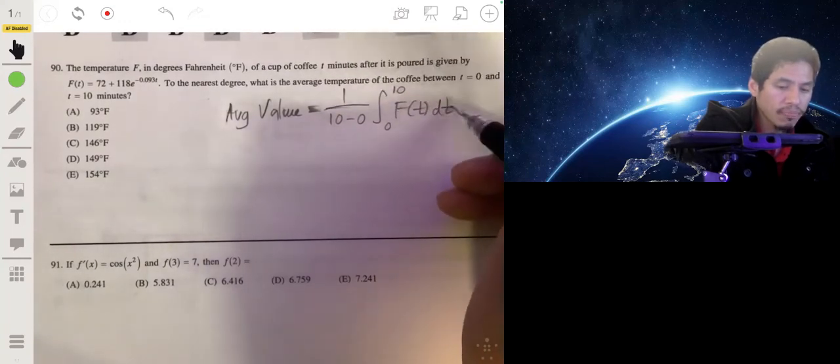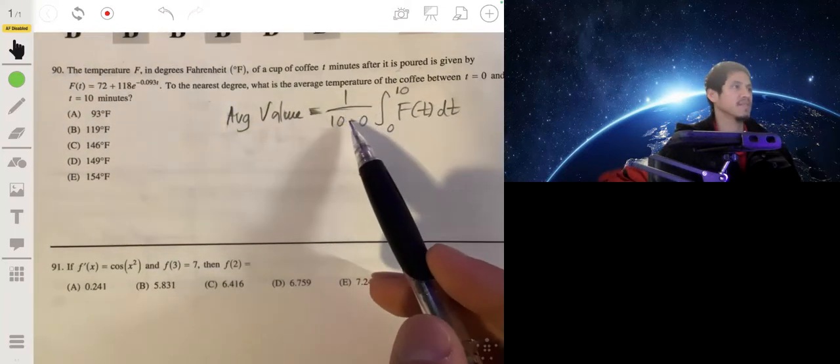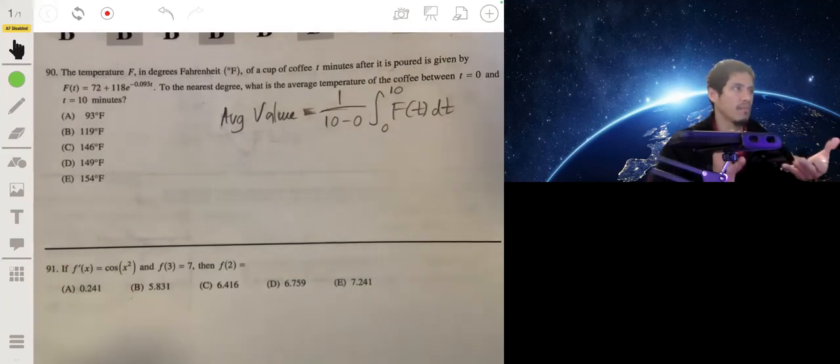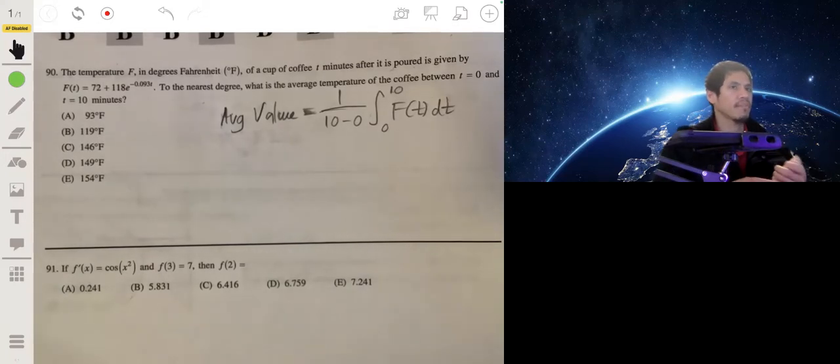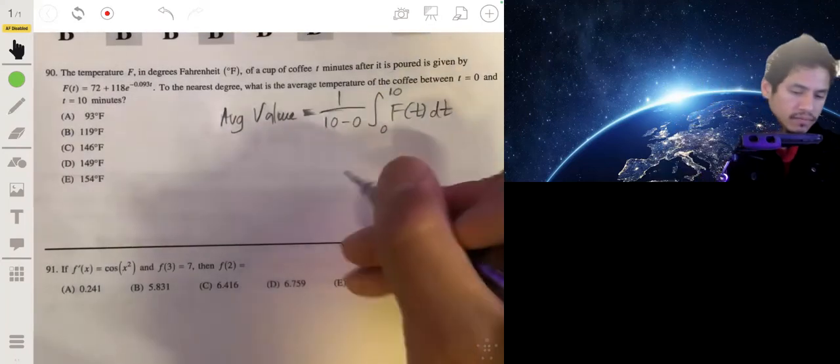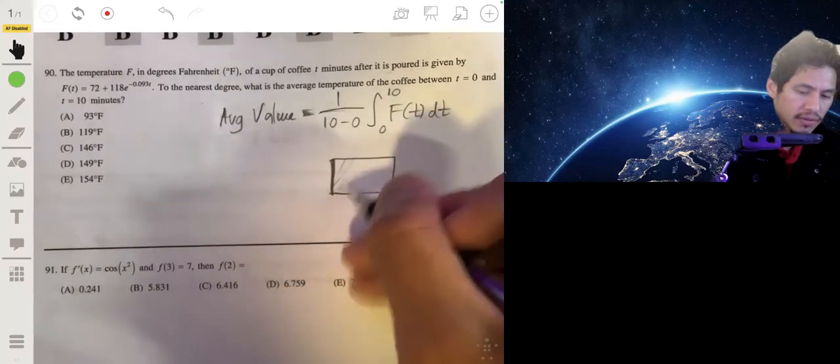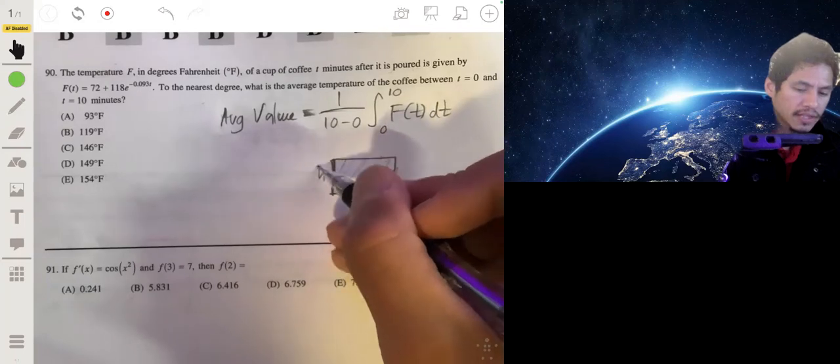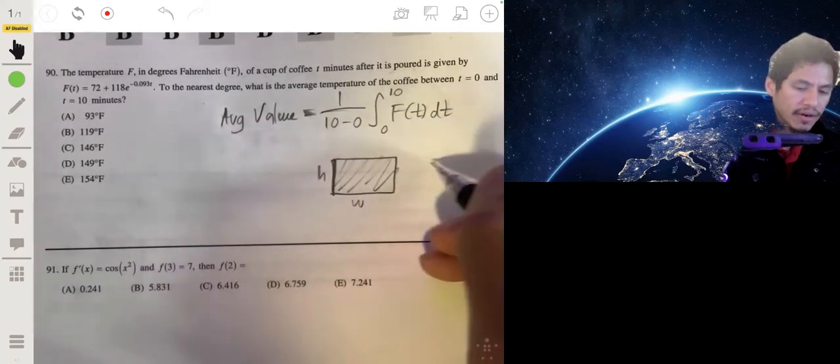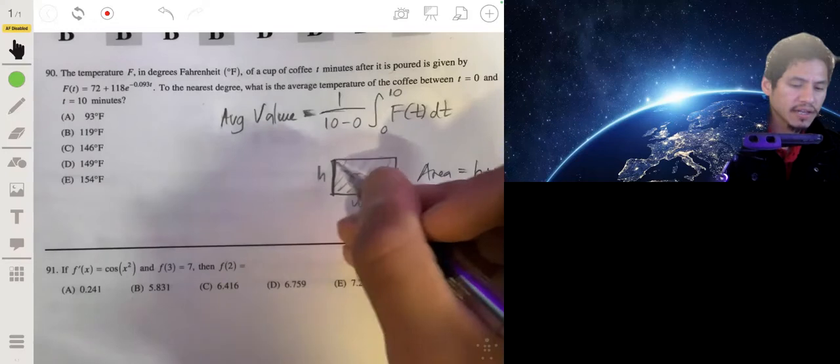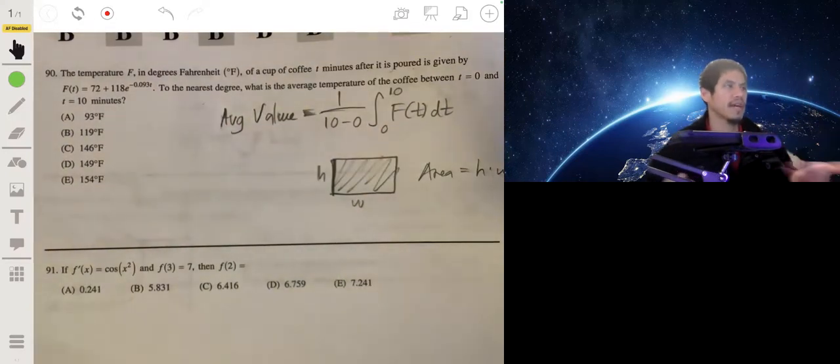The reason you multiply by 1/10 is because you're dividing the area of that integral by the width. It's like finding the area of a rectangle and then finding the height. If you have the area of the rectangle, you would divide the area by the width to get the height, and the height in this case would be the y value.